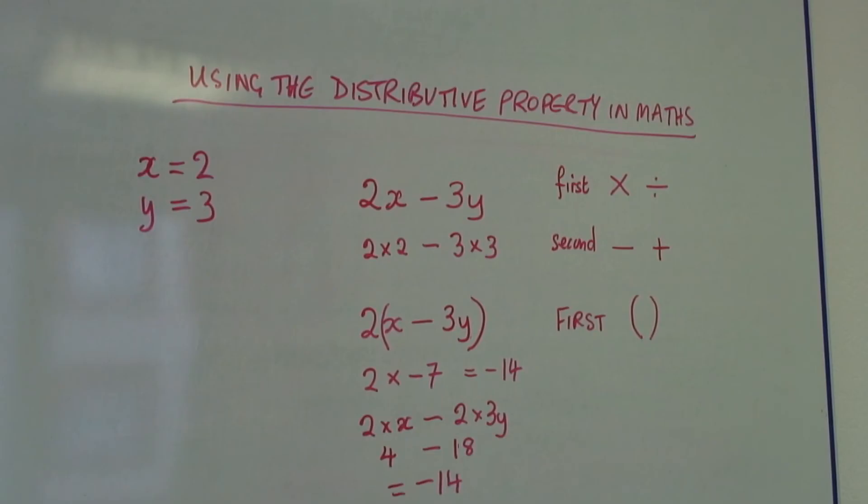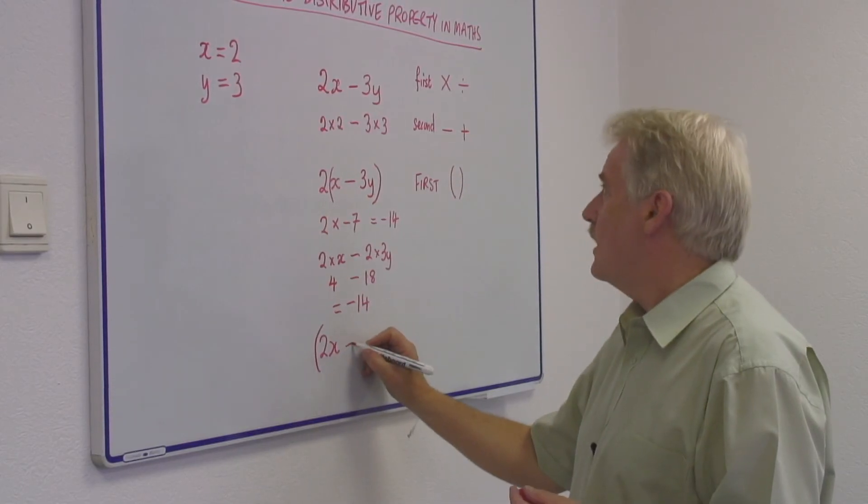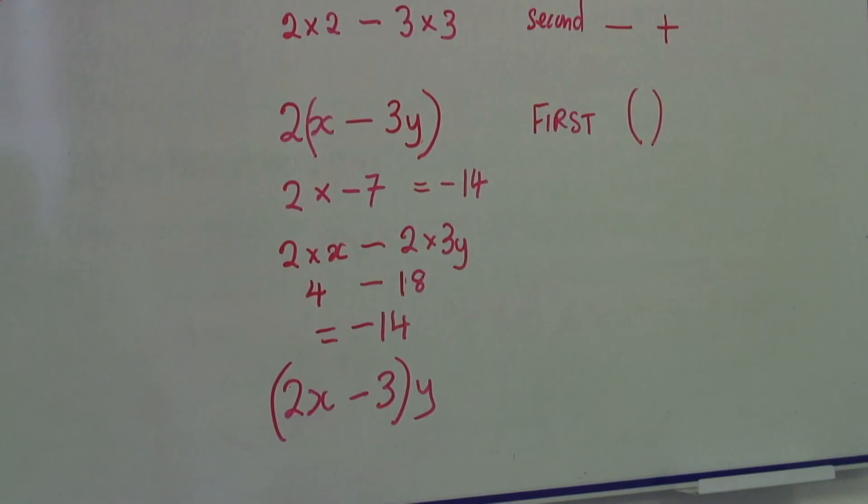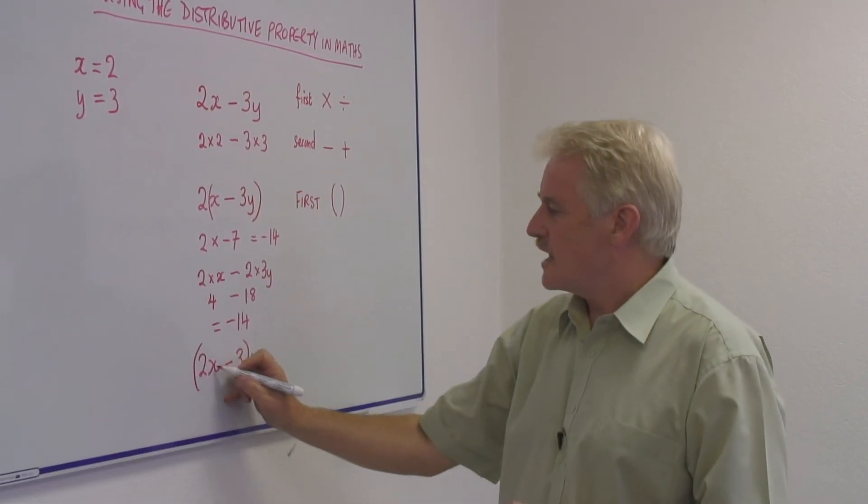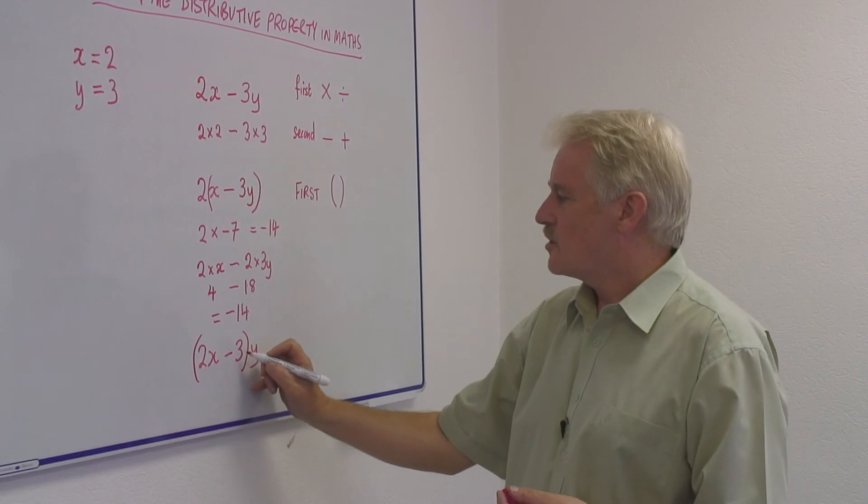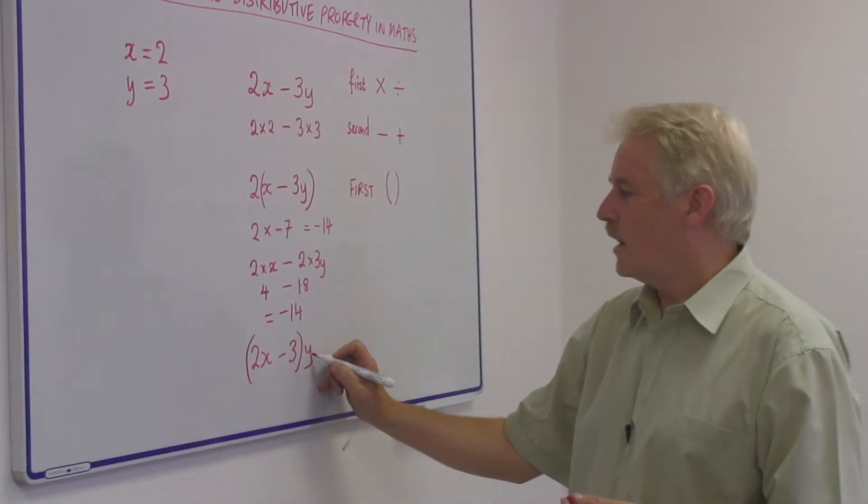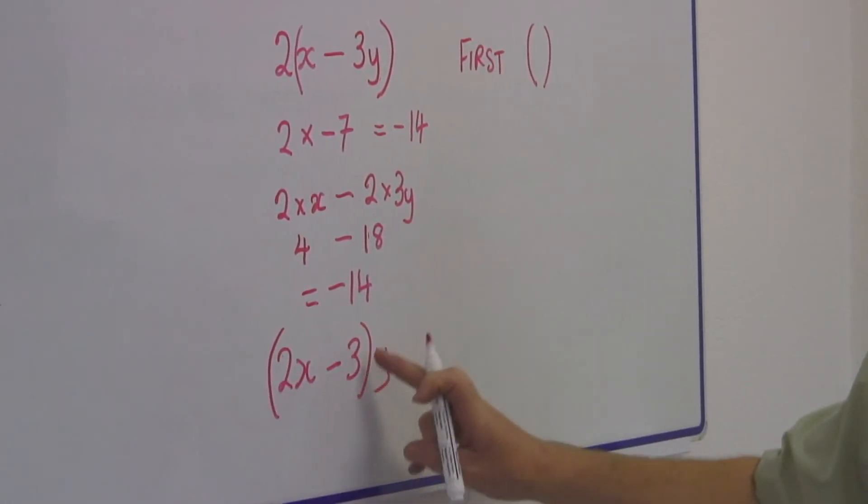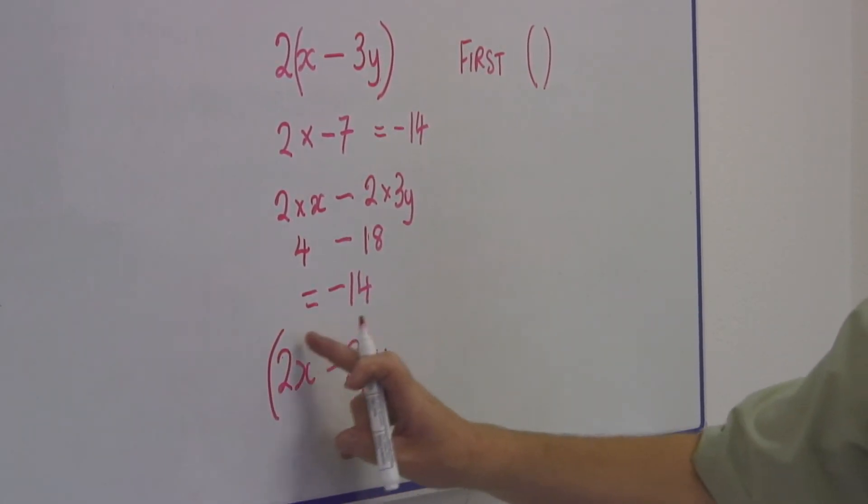Again, I can change this to say 2 times x minus 3 times y. If I do my distributive property, 2 times x minus 3 times y. So y is now multiplied by everything in here because this is done first.